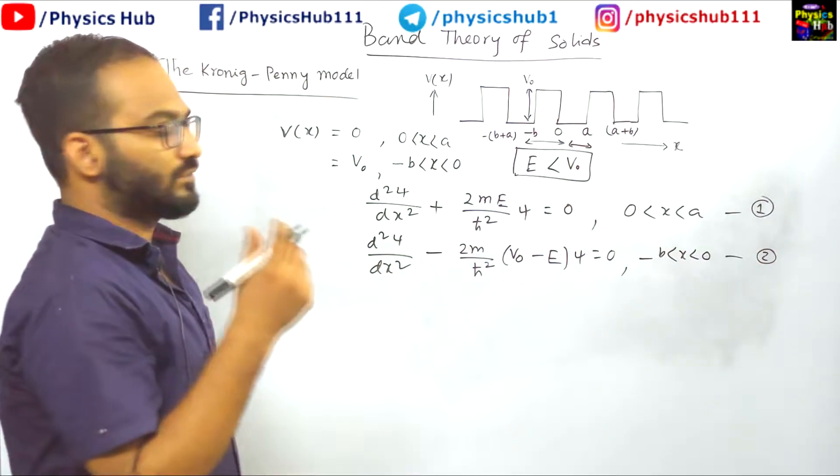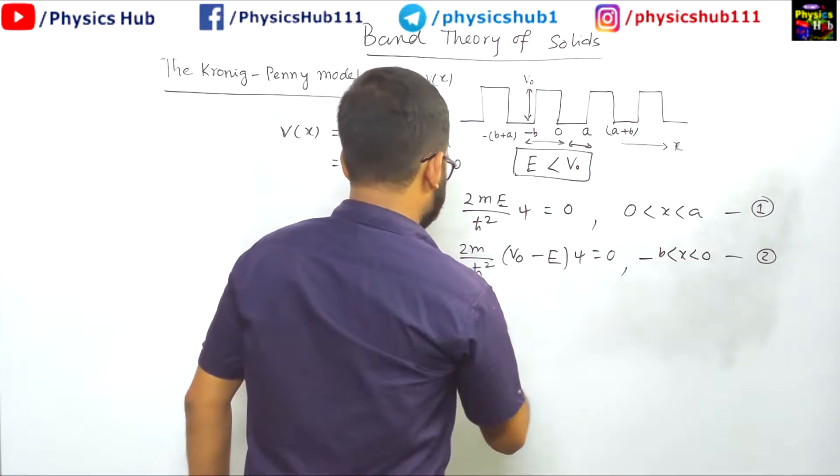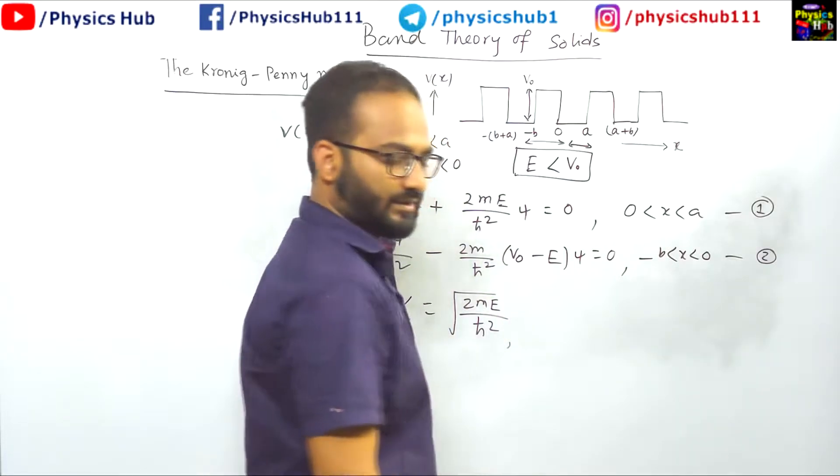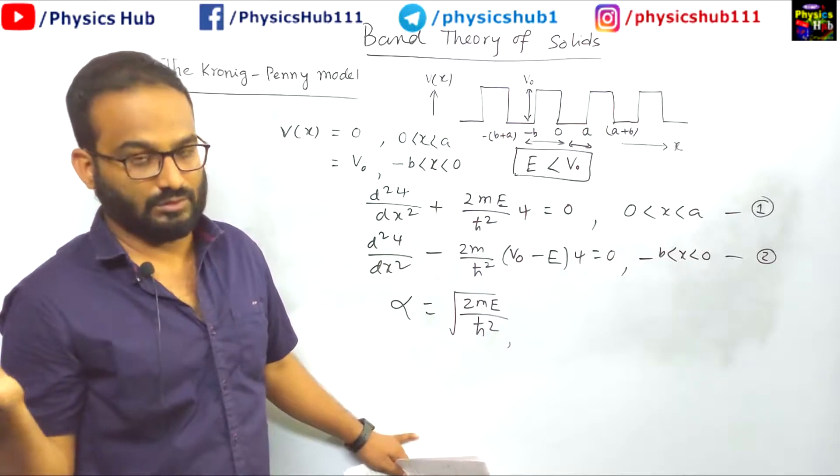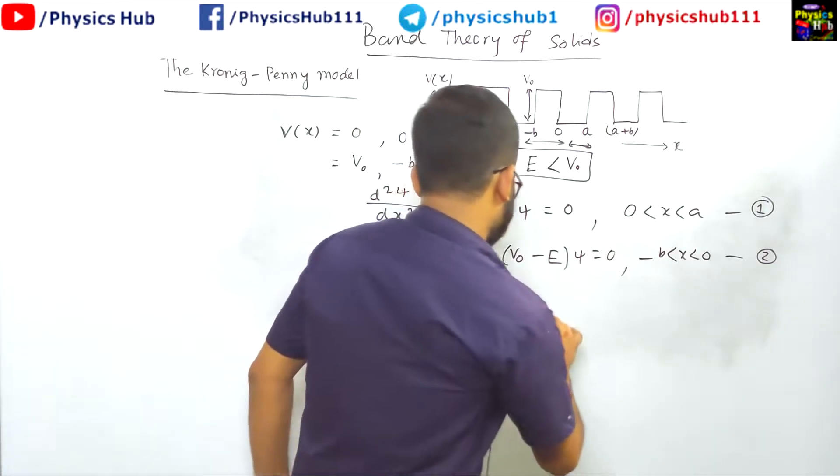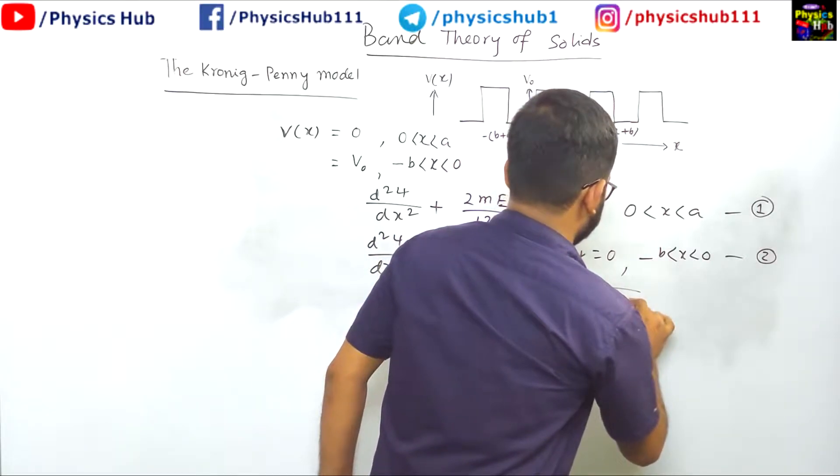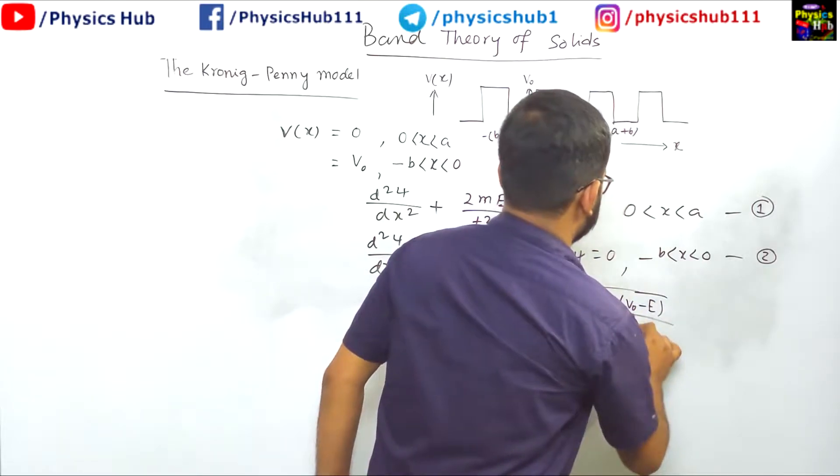Now we are introducing two quantities alpha and beta. Alpha equals √(2mE/ℏ²). These are very trivial things we have done in particle in the box in quantum mechanics. And beta equals √(2m(V₀ - E)/ℏ²).